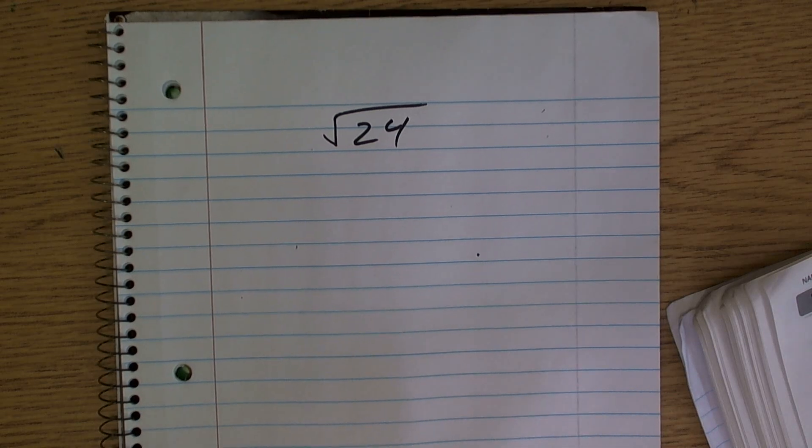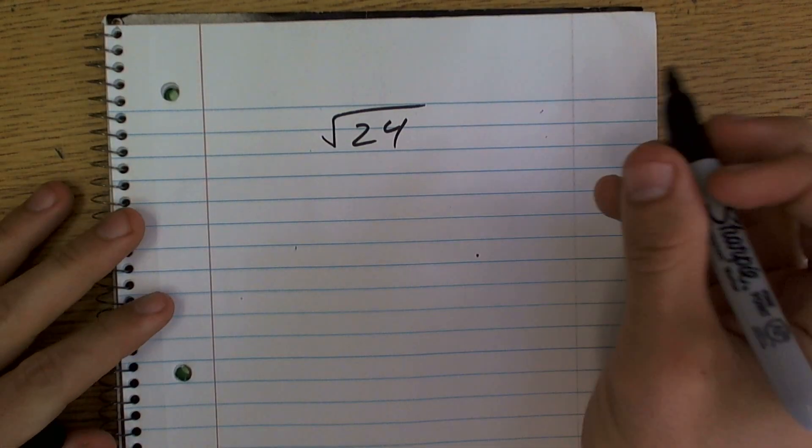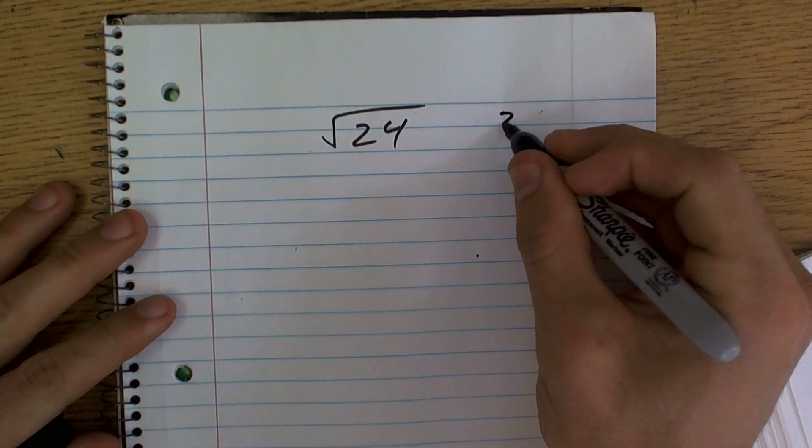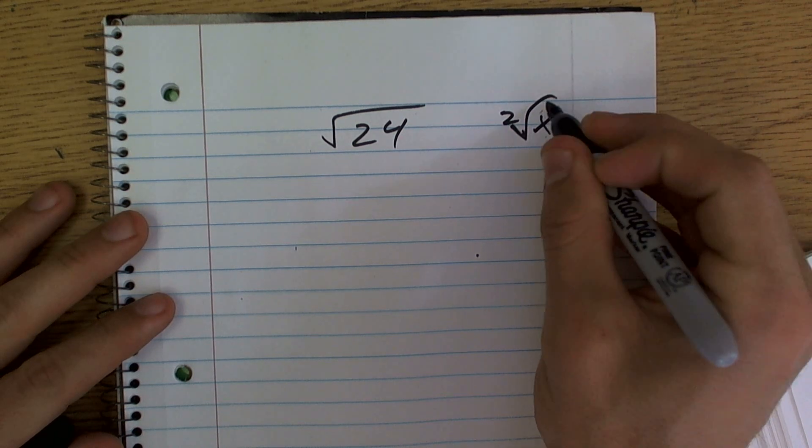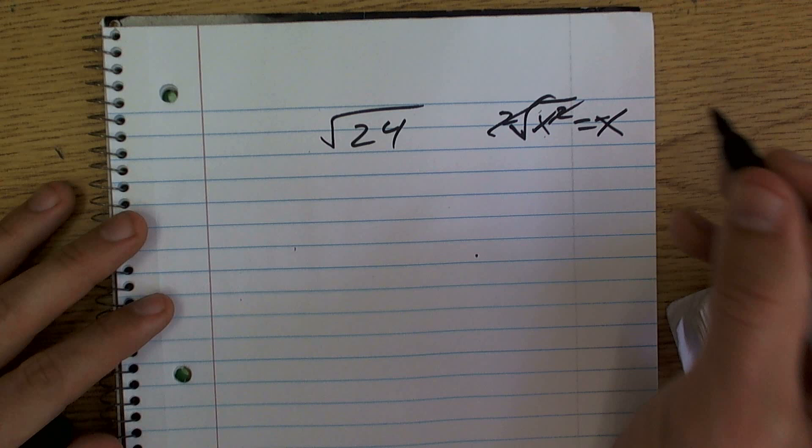All right, so here we have the square root of a number that's not a square number. What we've previously talked about is when we have the square root of a square number, squares cancel out and we're left with an x.